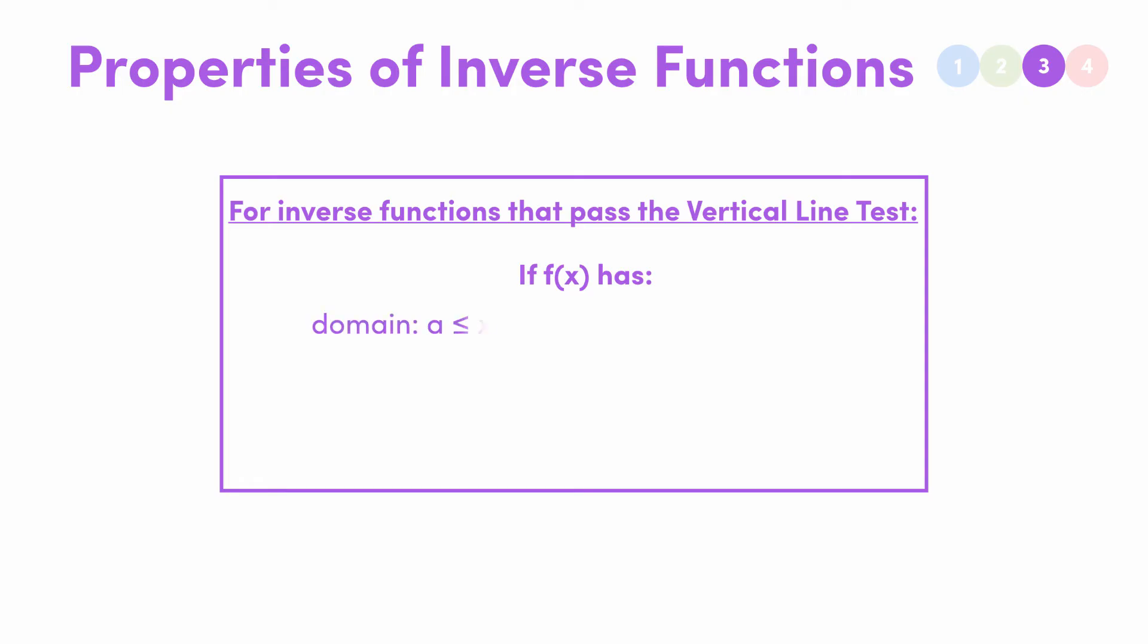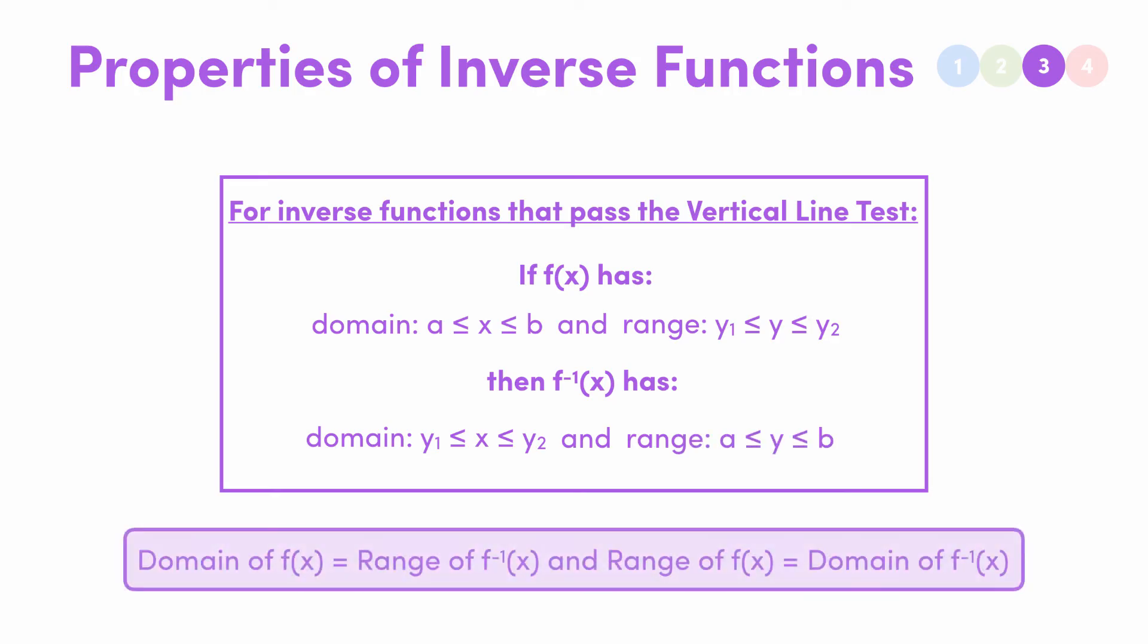If our function f of x is in a domain between a and b, and it has a range between y1 and y2, then the domain of our inverse function is x between y1 and y2, and it has a range between a and b. That is, the domain of our inverse function is the original function's range, and the range of our inverse function is the domain of our original function. This just hammers home our reflection property, and it makes things a bit easier to graph, as we'll see in the next video.